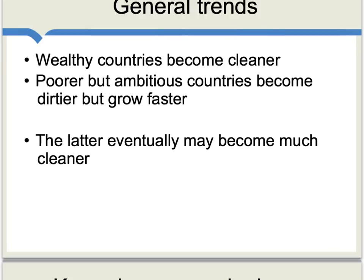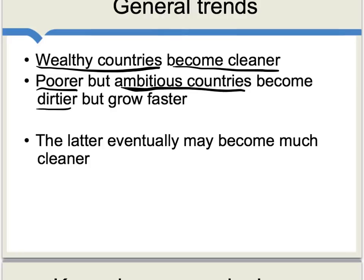First, in most environmental areas, over time, wealthy countries tend to become cleaner and trade helps them do that. A second general trend is that poorer but ambitious countries that want to grow may become much dirtier, but in becoming dirtier, they also will grow faster — China is an example. Note also that in the much longer run, those poorer, ambitious, but growing-dirtier countries may actually become much cleaner.